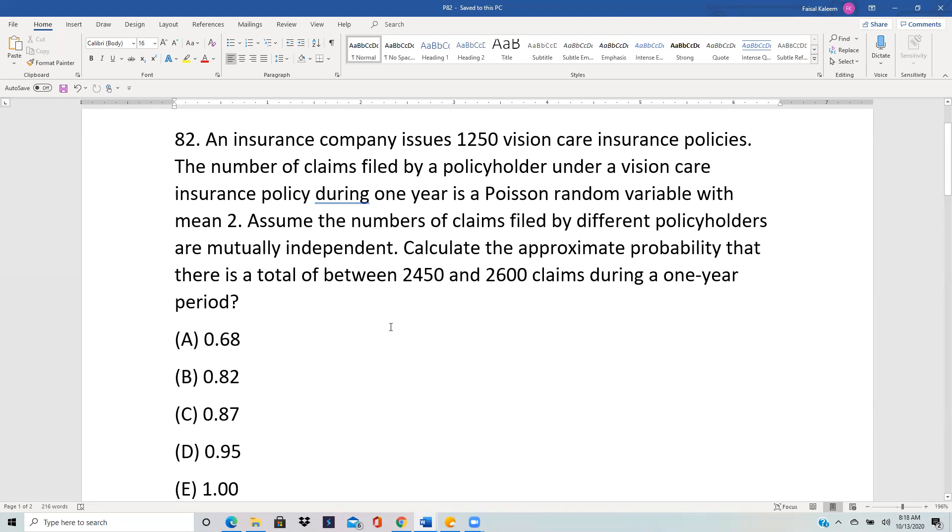Now on a computer, this problem can be done exactly through Poisson. But the problem with doing it by hand, which we have to do in the exam, is that there are just too many calculations. So between 2450 and 2600, there are about 150 calculations, and you're not going to add that many numbers.